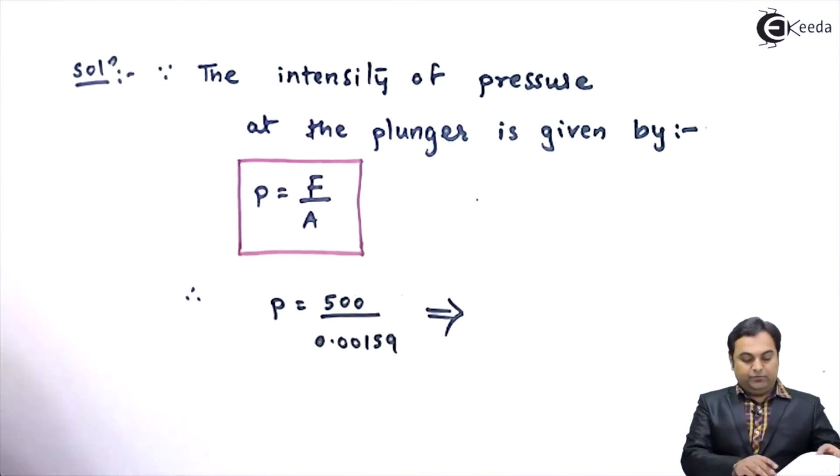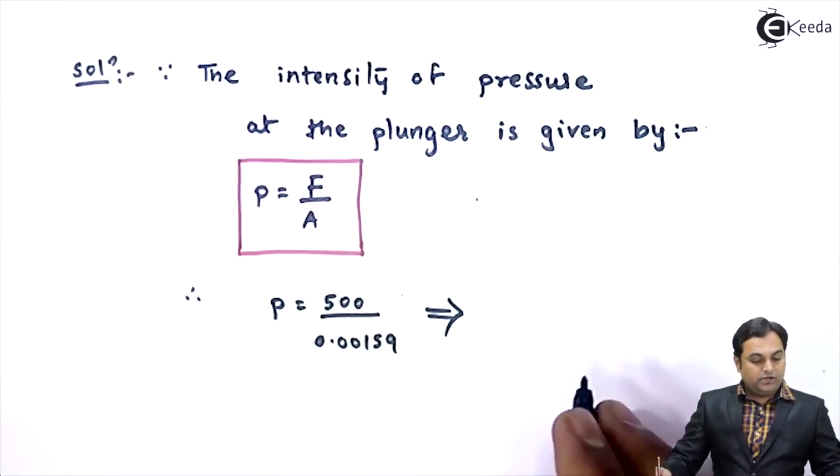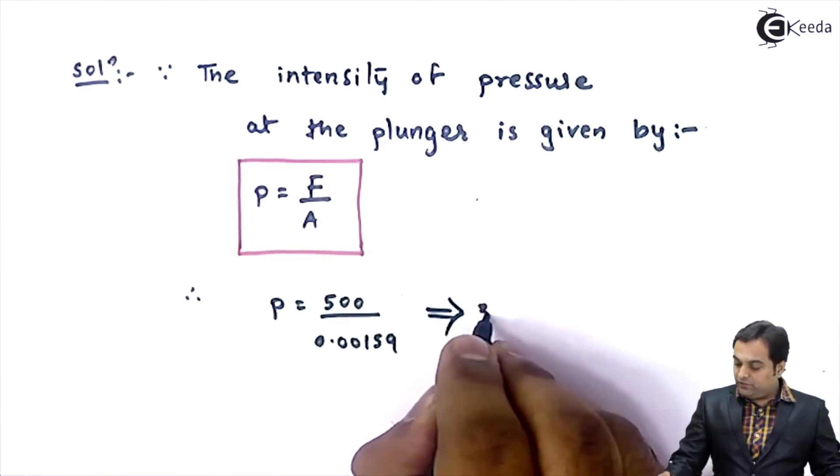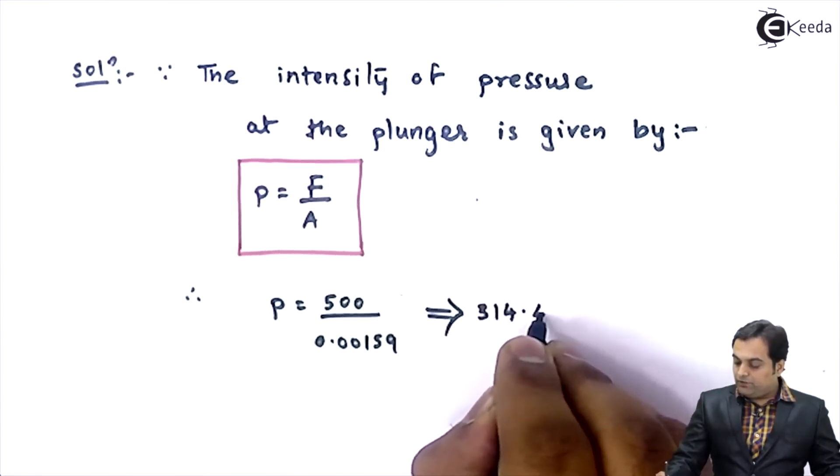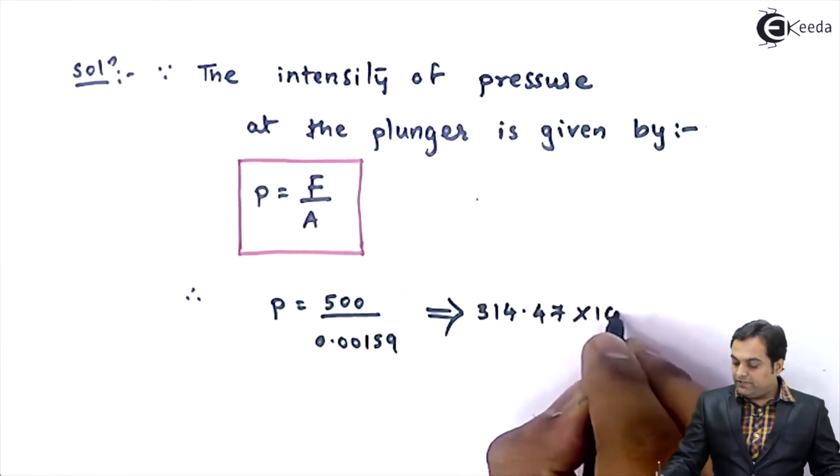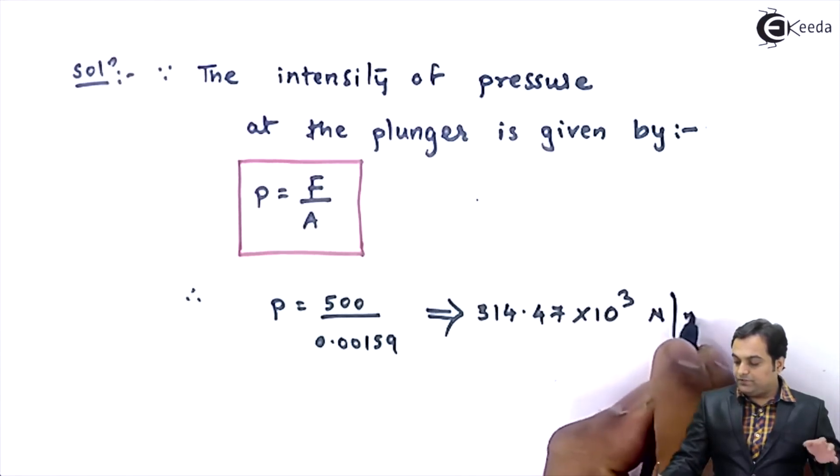So from this, numerator upon denominator will give me my answer of intensity of pressure, and that is 314.47 into 10 raised to 3 newton per meter square.